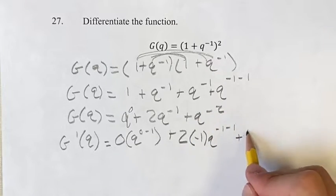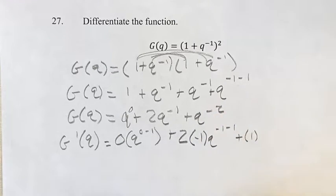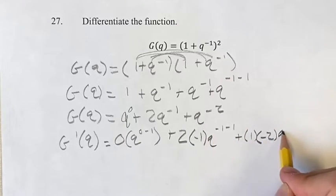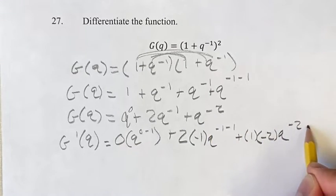One more time: our coefficient in this case is just 1, and we bring the exponent down, so negative 2, q to the negative 2 minus 1.